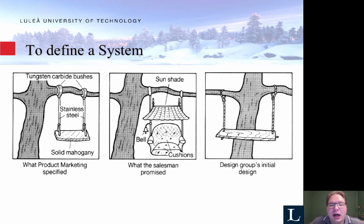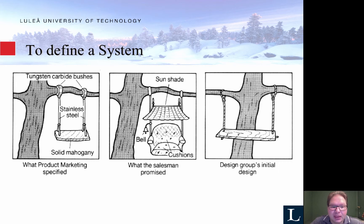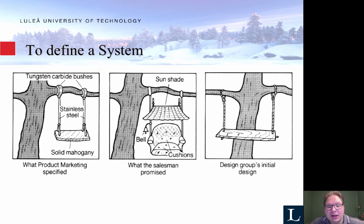The reason why it's so difficult to get those requirements correct is that we have a loss in communication. The person who captures the requirements may not be the person developing the features. So the product marketing team may specify a nice swing, as you see in the picture, maybe with stainless steel, mahogany boards, etc. The salesman of course is interested to sell this product and will therefore maybe add some extra features or make it sound better than it is.